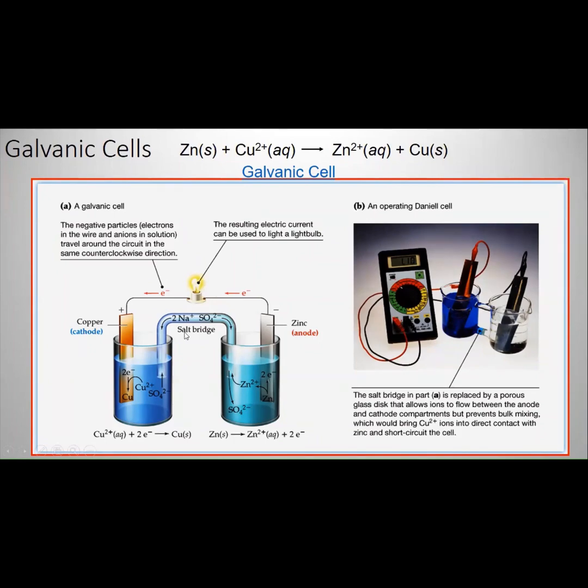What's in the salt bridge is a strong electrolyte. That strong electrolyte's function is to move either to the anode compartment or the cathode compartment to neutralize the excess ions.